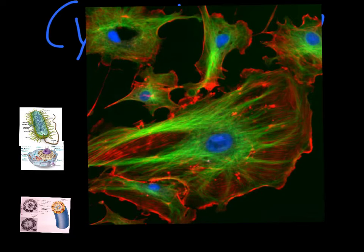The red parts are the microfilaments, which are made of actin. The green parts are the microtubules, which are made of something called tubulin. When it comes to these structures, the most important thing to know is that they support the outside of the cell — they're what gives the cell its shape.